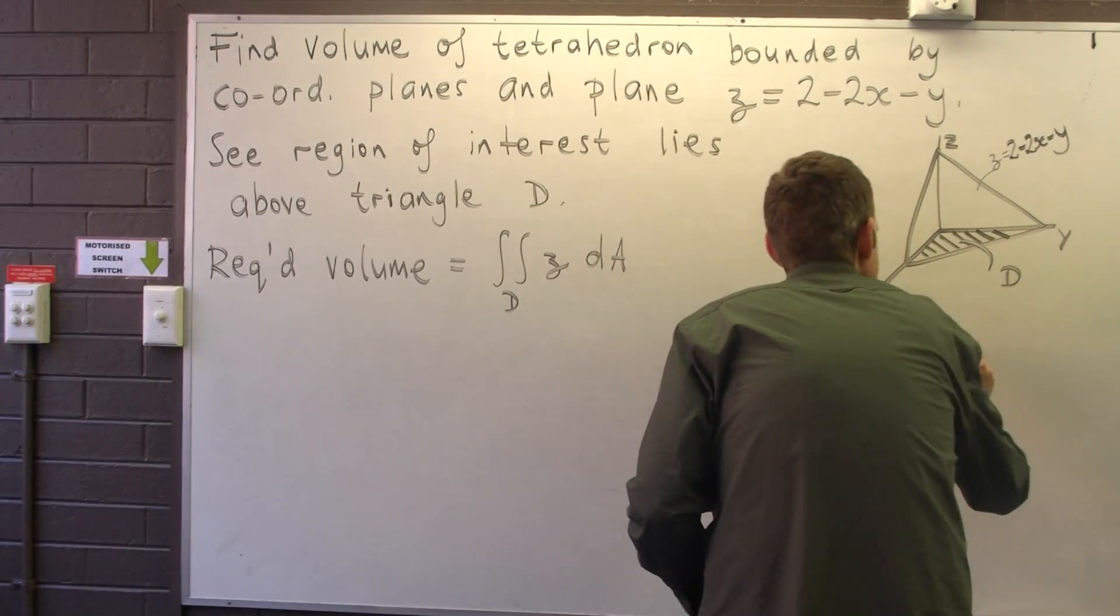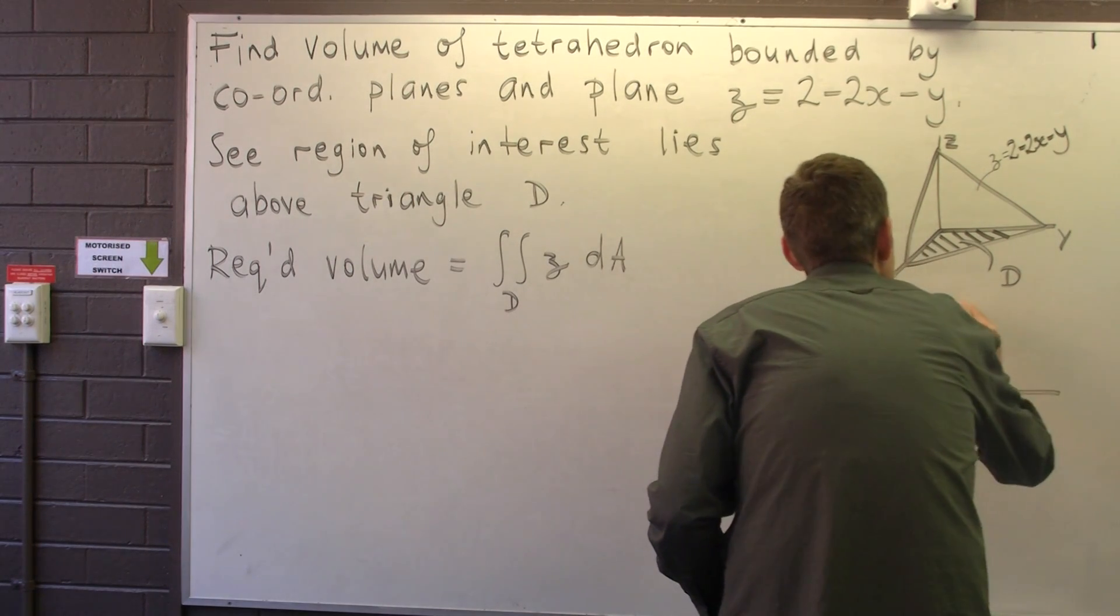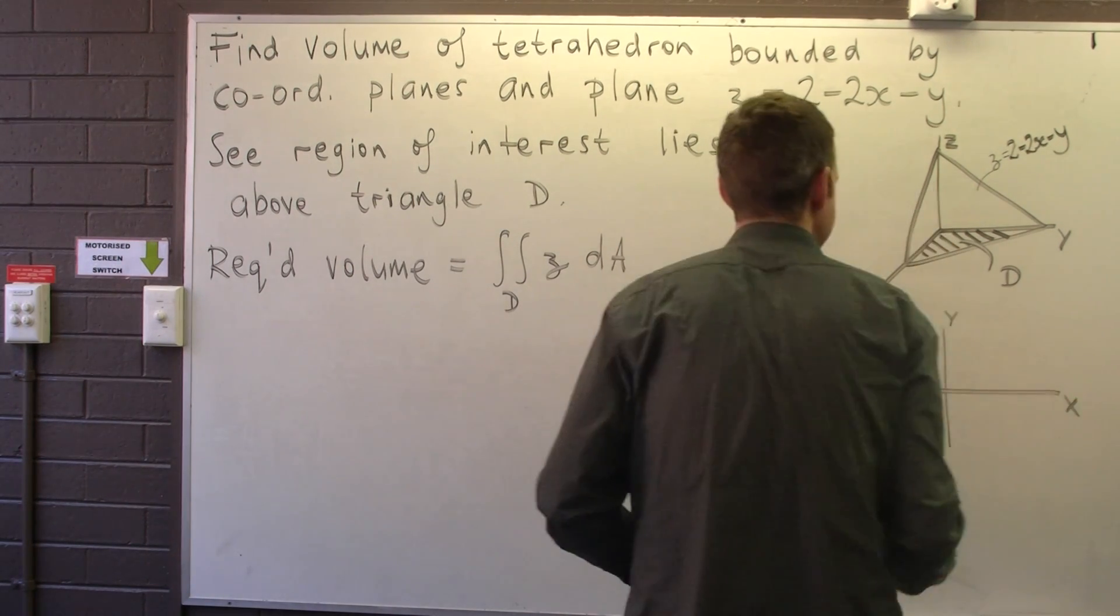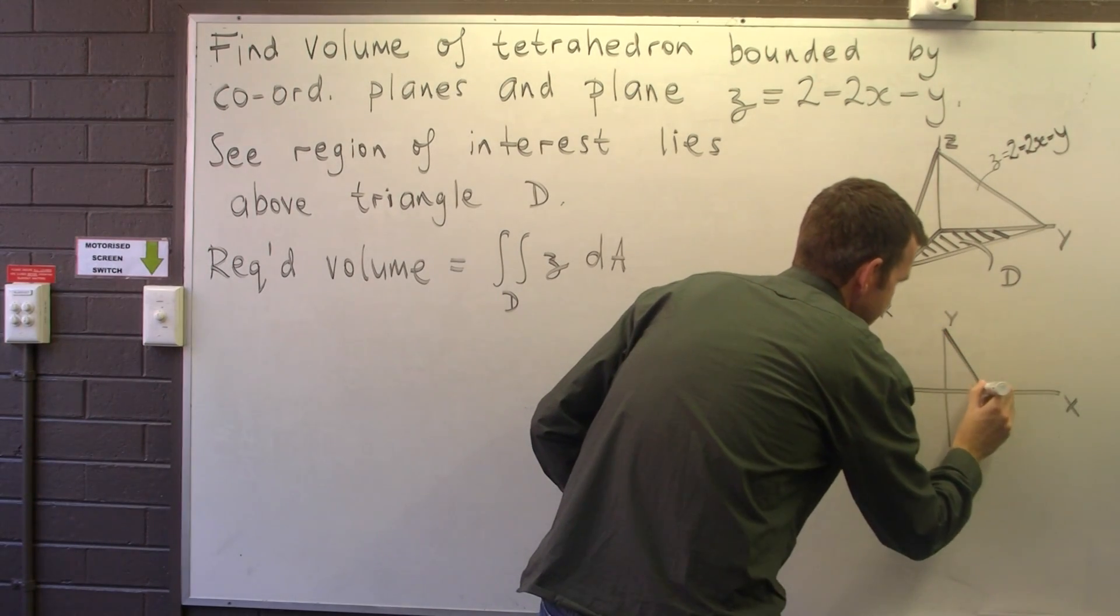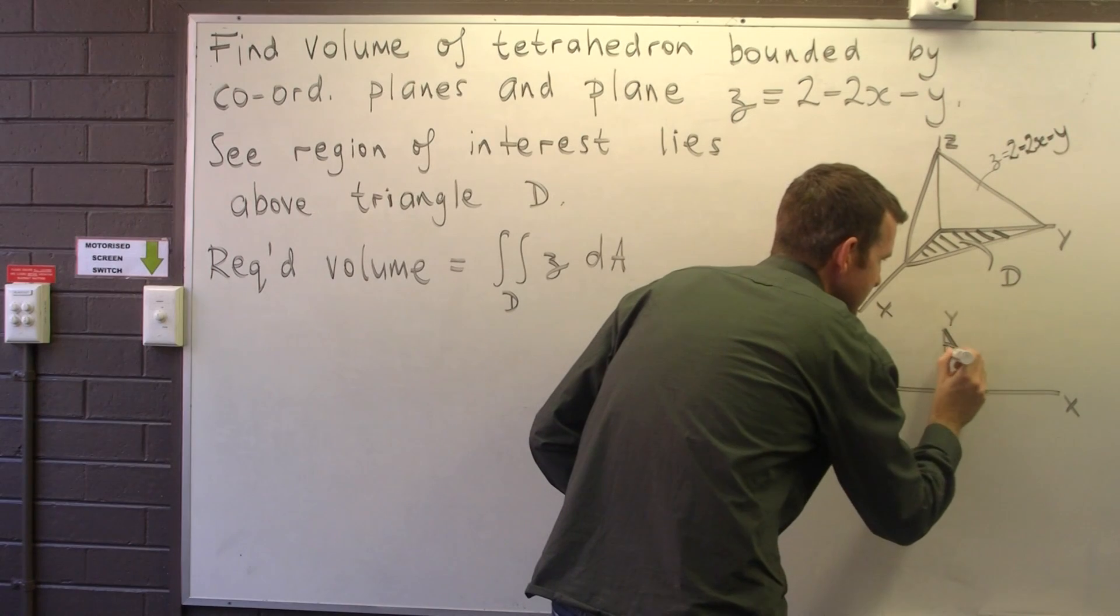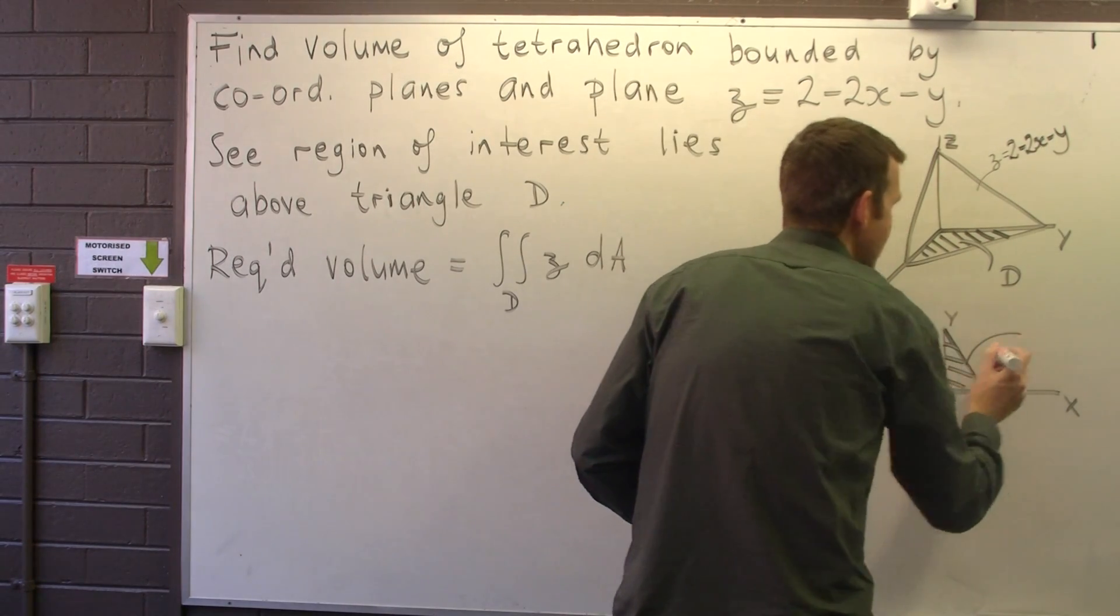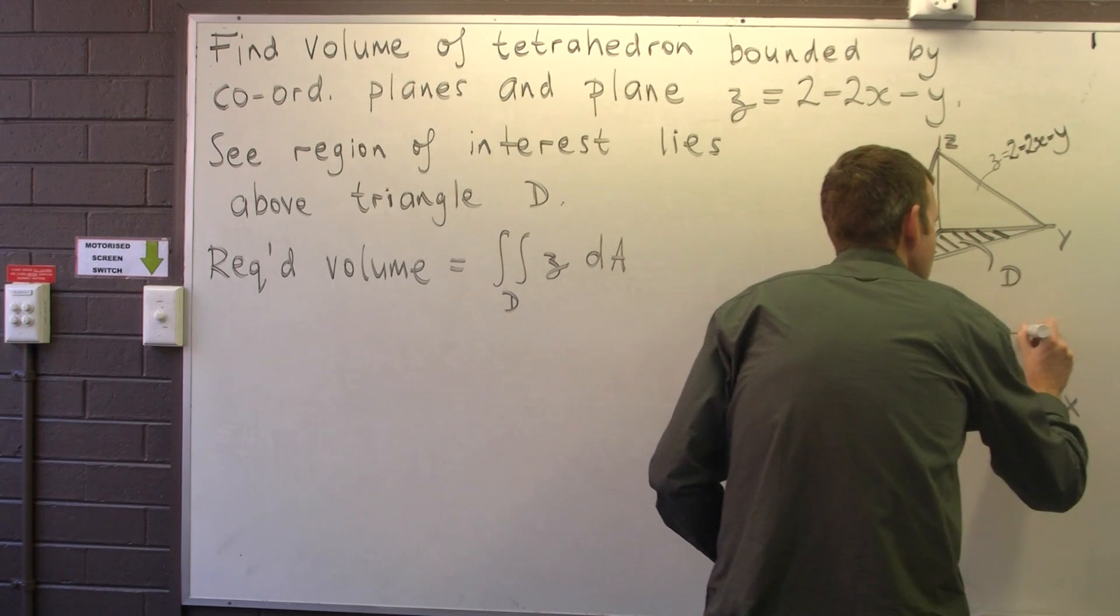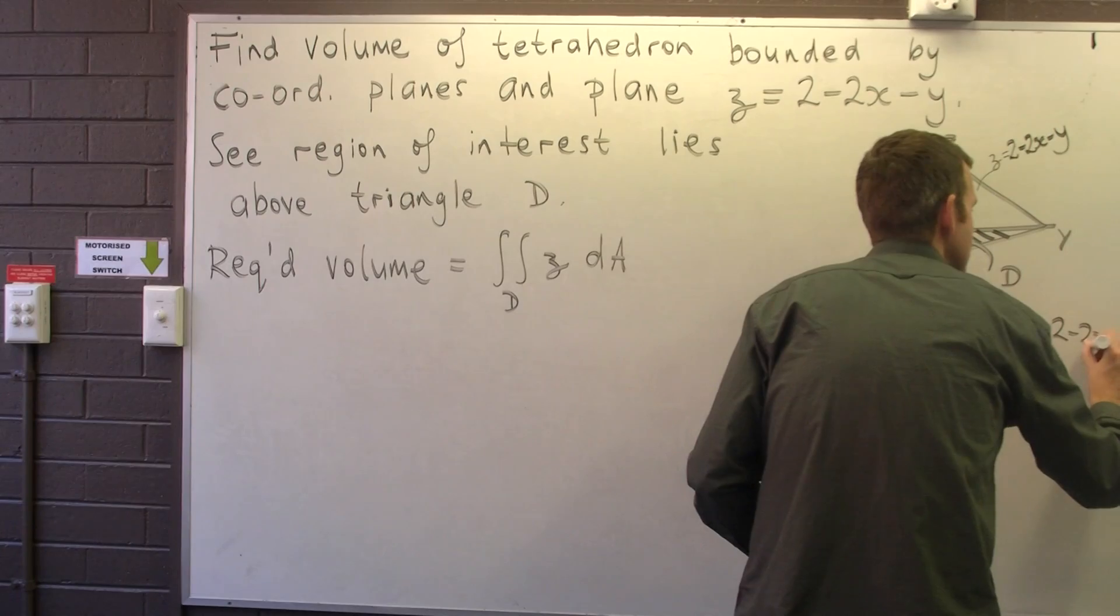So let's transfer this down to the XY plane. It's going to look a little bit like this, and this is the line Y equals 2 minus 2X.